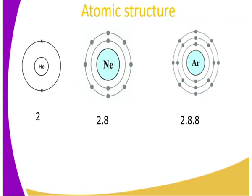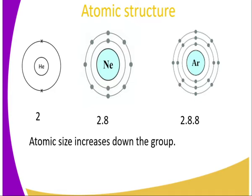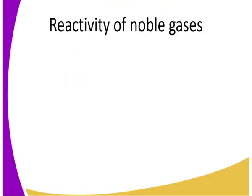We mentioned earlier that if the outermost energy level has the maximum number of electrons it can hold, then the atom is said to be stable. Atomic size increases down the group in noble gases.